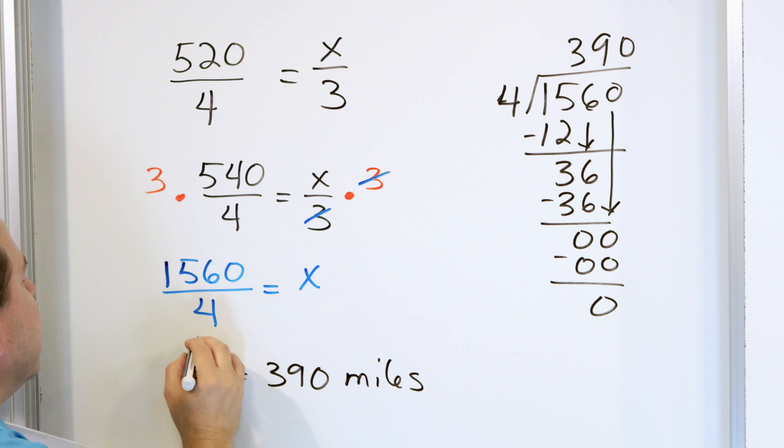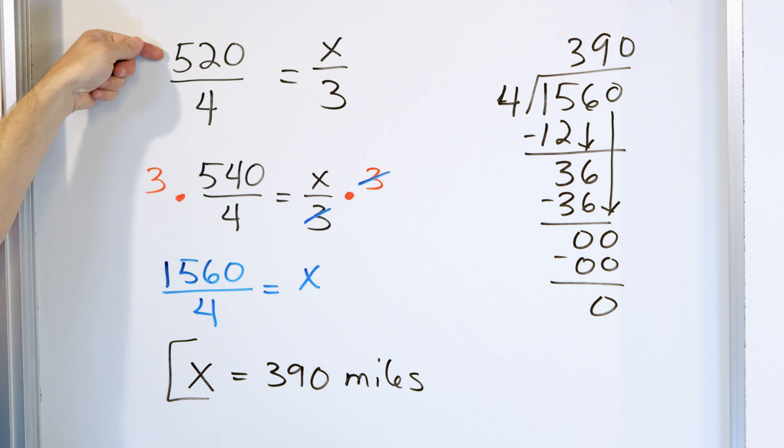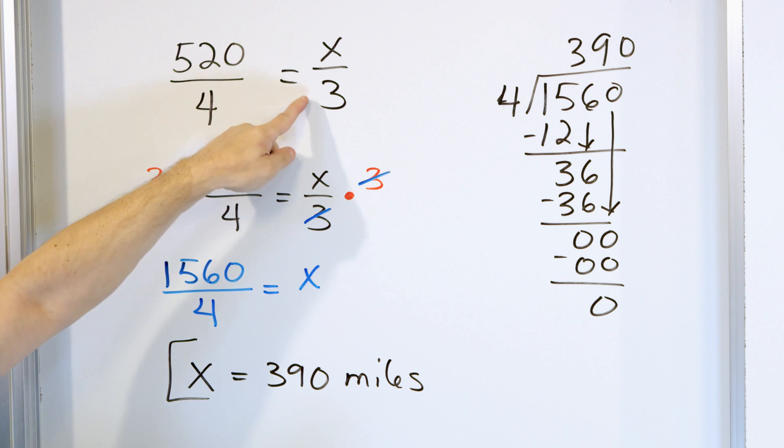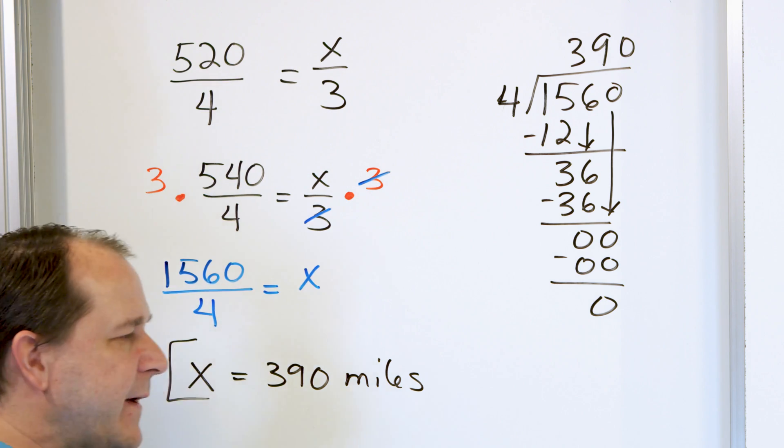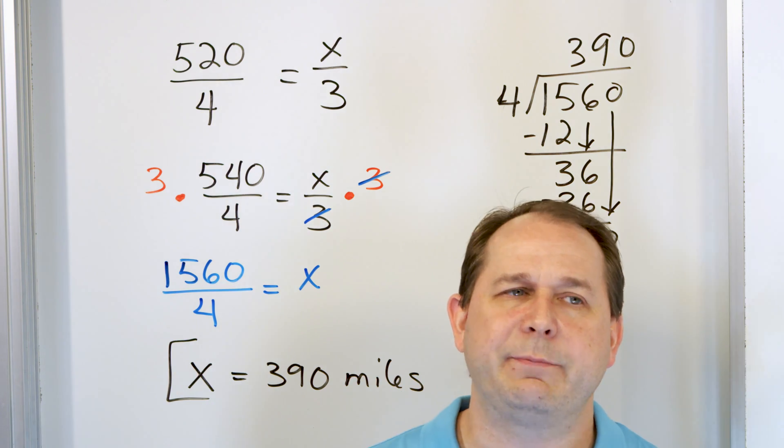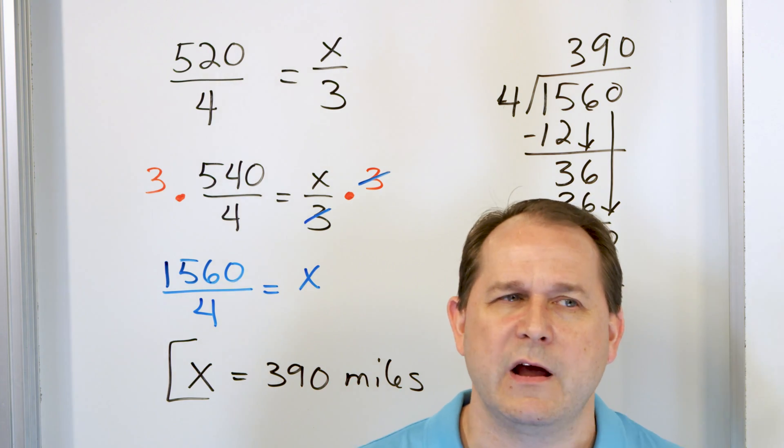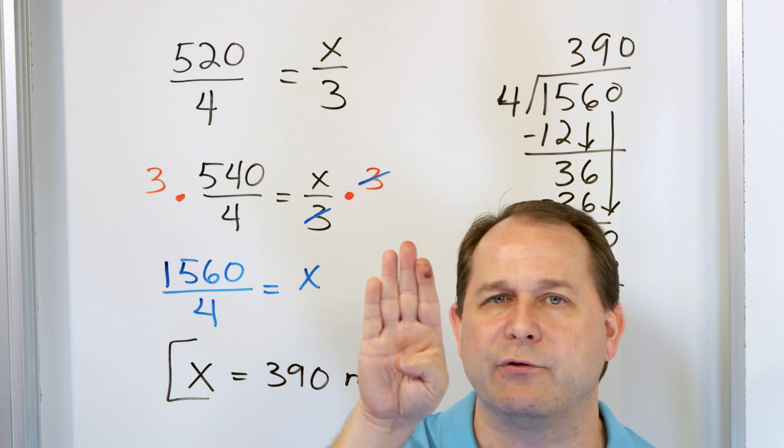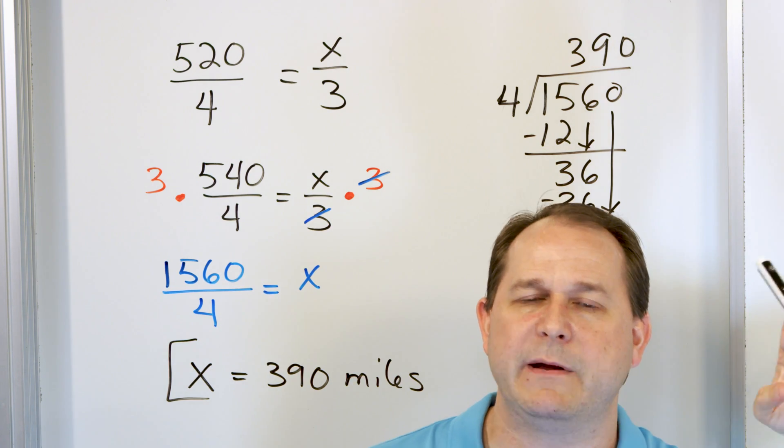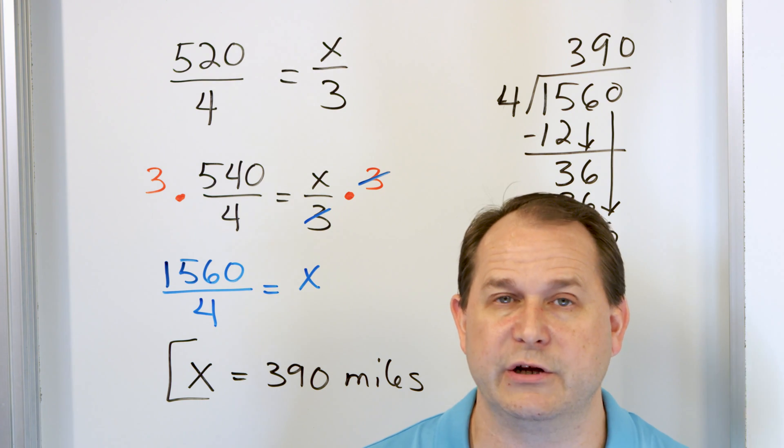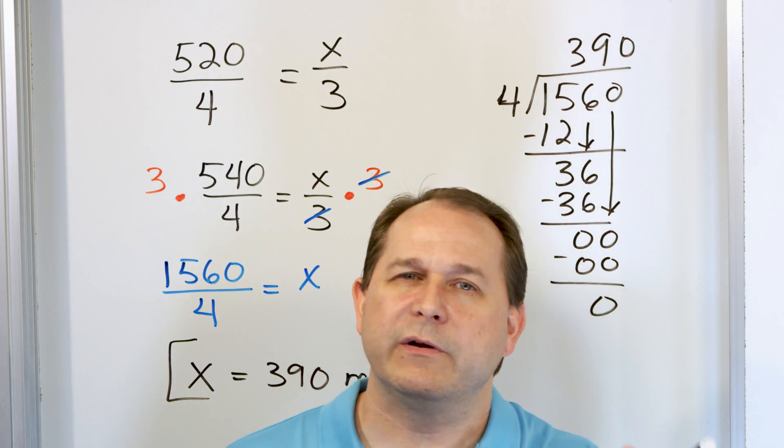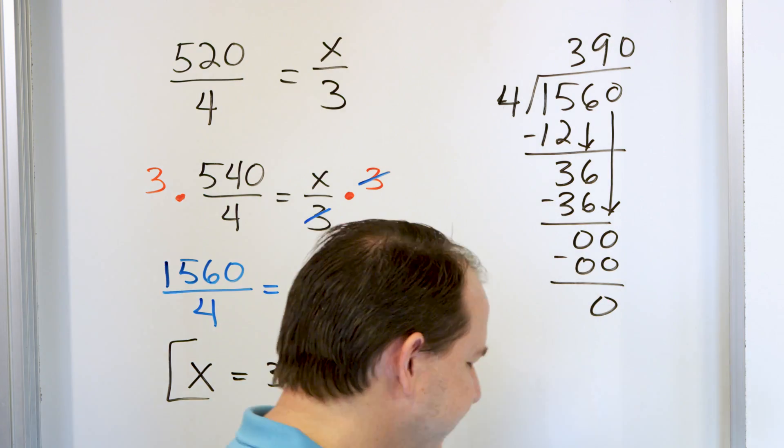Now, you should always do what I call a smell test at the end. You want to see if it smells right. Does 390 seem correct? Well, if it takes 4 hours to go 520 miles, then for less time in hours, one whole hour less, it should be less than 520. And that's what we got. We got 390 miles. Now, this is, I think, probably the best way to solve it. Just because we're using our knowledge of proportions. We're locking a rate in in the travel time of the airplane and we're locking it into some other time and we're solving and we're using, you know, we're solving for the unknown. But I want to solve it a different way just to show you that you're going to get to the same place.